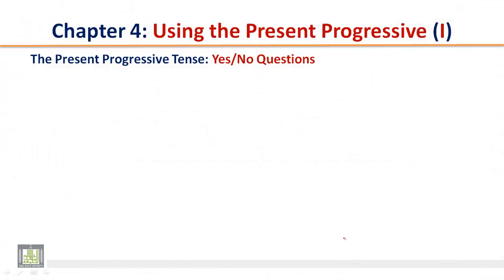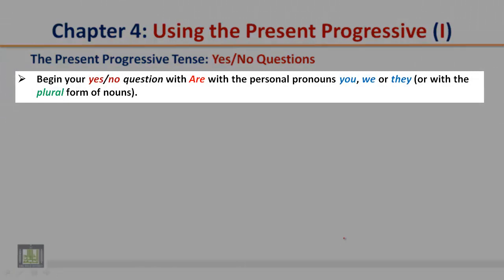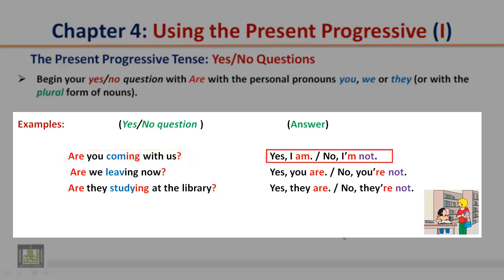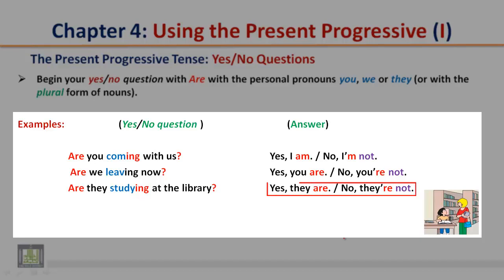The present progressive tense: yes or no questions. Begin your yes or no question with are, with the personal pronouns you, we, or they, or with the plural form of nouns. Examples — Yes or no question: Are you coming with us? Answer: Yes, I am. No, I'm not. Yes or no question: Are we leaving now? Answer: Yes, you are. No, you're not. Yes or no question: Are they studying at the library? Answer: Yes, they are. Or no, they're not.